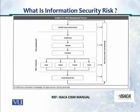In this diagram from the ISACA-CISM manual — the Certified Information Security Manager manual — the process of risk management is described. We start off with establishing the scope and the boundaries of the risk management process: identifying what is in scope, what are the boundaries, and which departments are included.